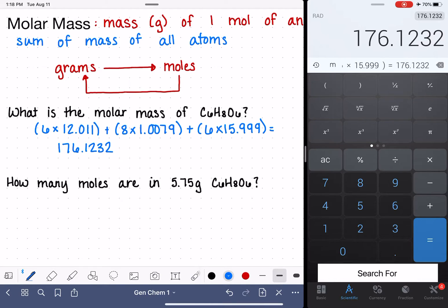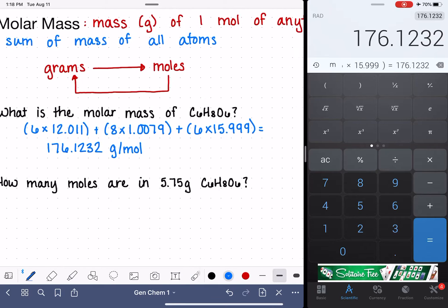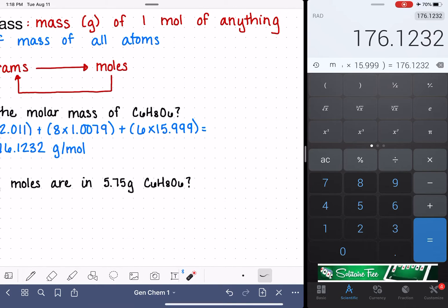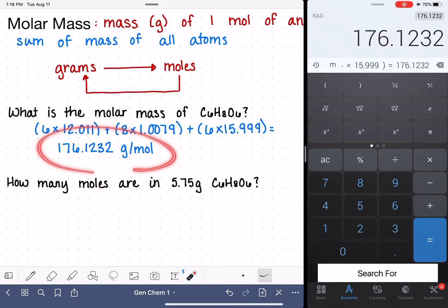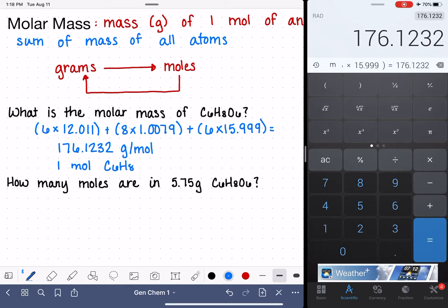There are two options for units you can use for the molar mass: AMUs or grams per mole. For the work we're doing in this video, we want to use units of grams per mole. This number tells us specifically that one mole of C6H8O6 has a mass of 176.1232 grams.